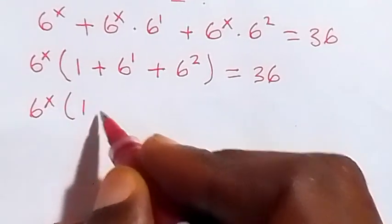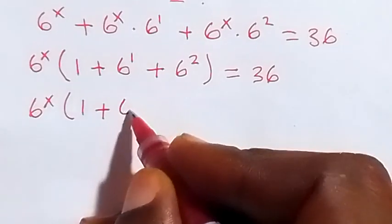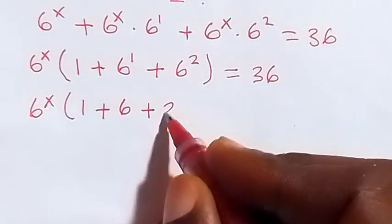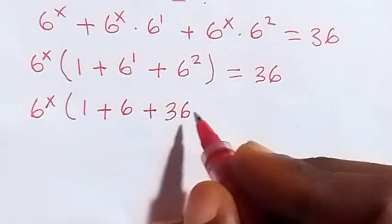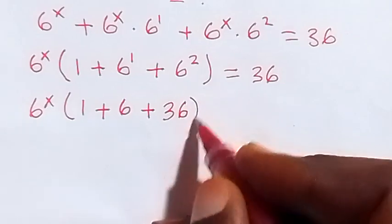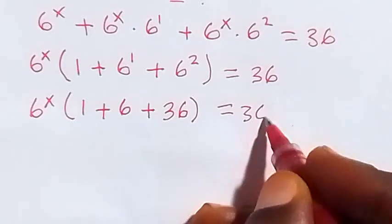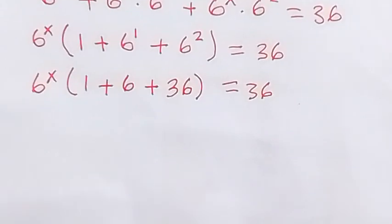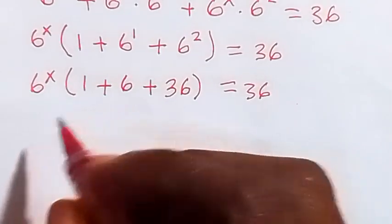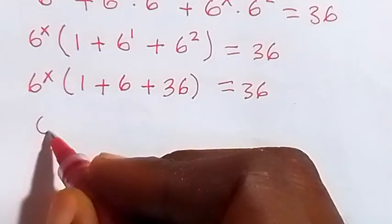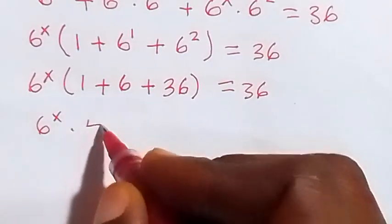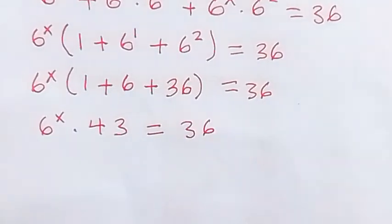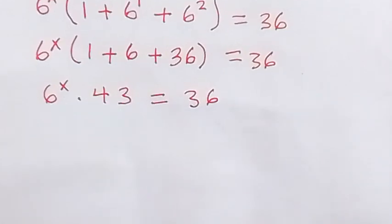Multiplied by 1 plus 6 raised to power 1, which is 6, plus 6 raised to power 2, that is 36, then close bracket equals to 36. So when we sum this up in the bracket we have 43, so we have 6 raised to power x times 43 equals to 36.